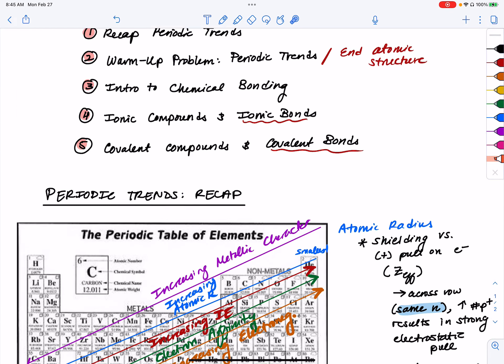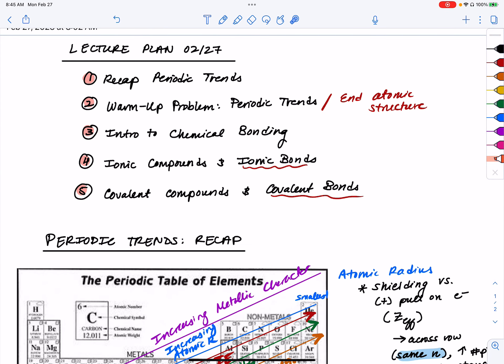This was a very brief overview of our periodic trends. Make sure you're looking out for trends in effective nuclear charge as well as your electron configurations. And just to give us a little practice with this we're going to do a warm-up video or a warm-up problem in our next video, video two.